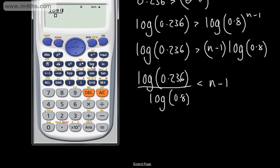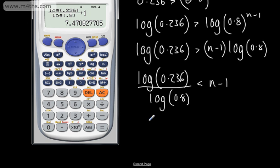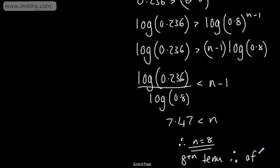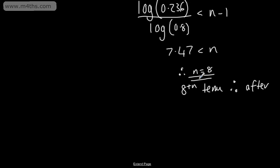Adding 1 to both sides and computing: log of 0.236 divided by log of 0.8 plus 1 gives approximately 7.47. So n must be greater than 7.47, therefore n equals 8. This is the 8th term.